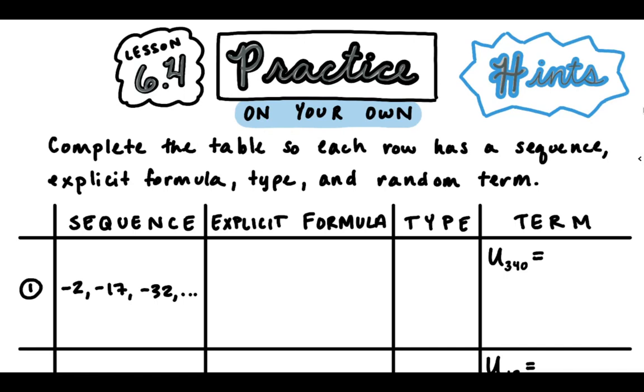So my first hint is that this is an arithmetic sequence. To write the explicit formula you're going to use this form: u sub n equals u sub 1, that's your first term, plus common difference times n minus 1. To write this formula you just need to figure out what these numbers are. So your job is to find these values.